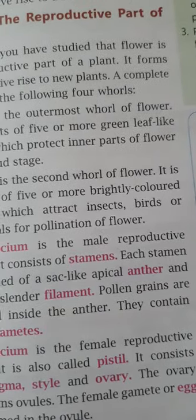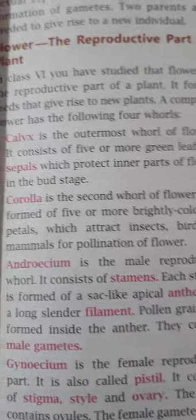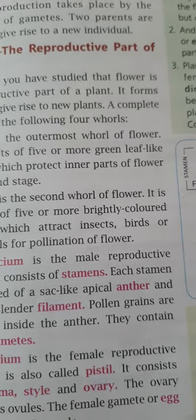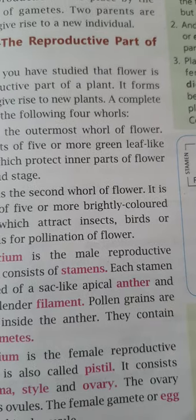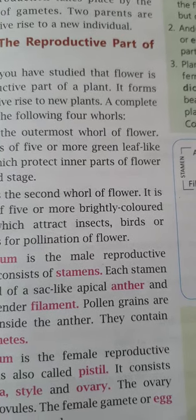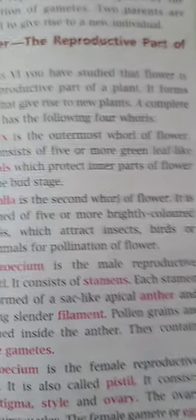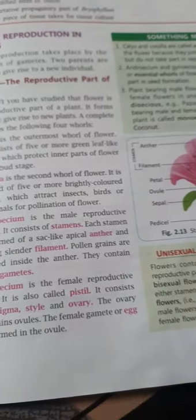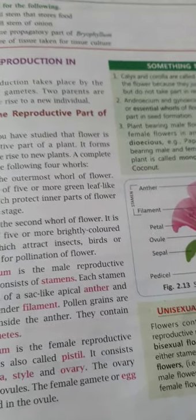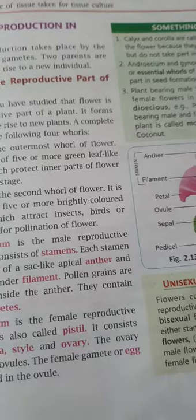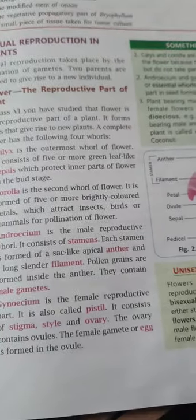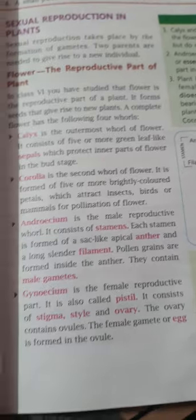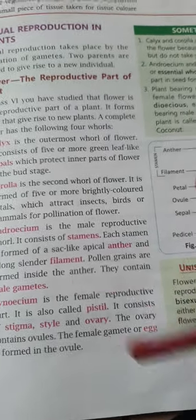Microsporangia consists of tapetum. The cells are multinucleate and this layer is one of the innermost layers of the wall. Other layers include the middle layer, endothecium, and epidermis. These are the parts of the microsporangia which help to form the pollen grains inside the pollen sac, where all the pollen are stored for further pollination.